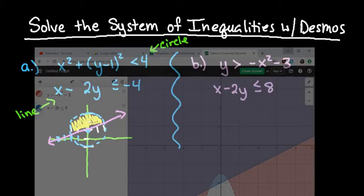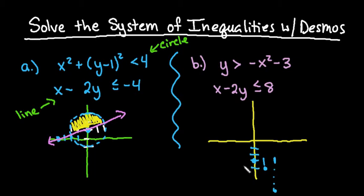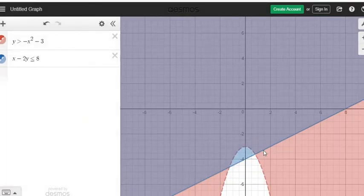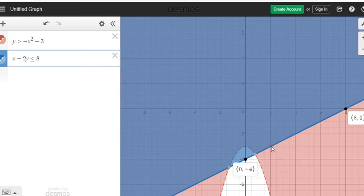Just a recap: I can use Desmos to quickly see what the graph would look like, then put it on paper. This parabola has a vertex at negative 3. I would go over 1, down 1, then over 2, down 4 to get the next point, and because it's symmetric, it does the same on the other side. This would be dotted because it's just greater than. For the line, if I click on it, I can see it goes through 0, negative 4 and 8, 0. At x equals 2 it's at negative 3, so we could use 0, negative 4 and 2, negative 3 as our plotting points.